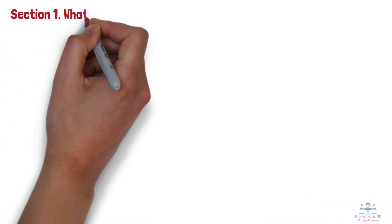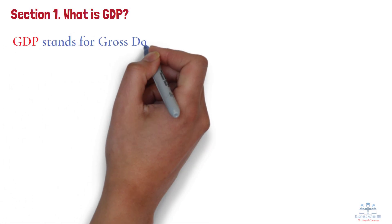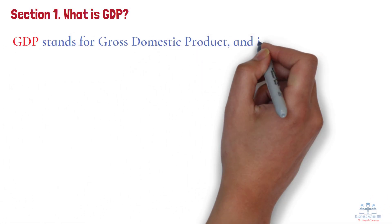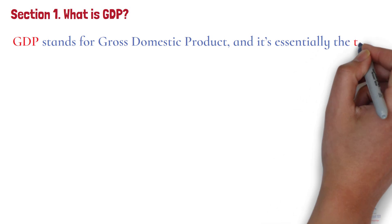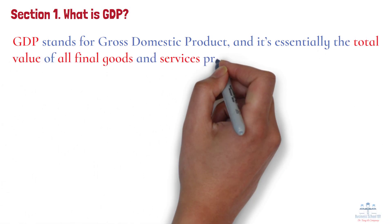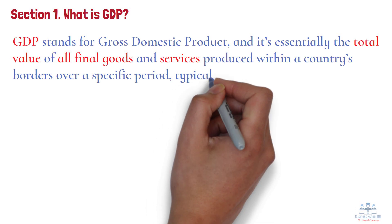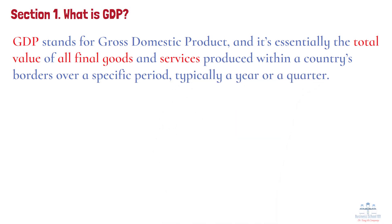Section 1: What is GDP? First things first, what is GDP? Well, GDP stands for gross domestic product, and it's essentially the total value of all final goods and services produced within a country's borders over a specific period, typically a year or a quarter.